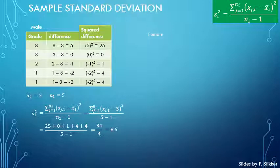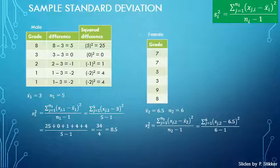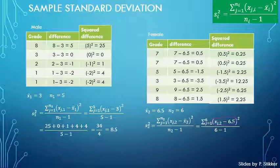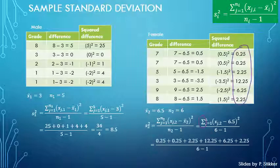Now let's do the same for the female group. The variance S2 is calculated by substituting 2 everywhere, filling in the known values. We subtract the female mean from each score, then square those results. Summing all the squared differences gives 23.5, and dividing gives a sample variance of approximately 4.7.